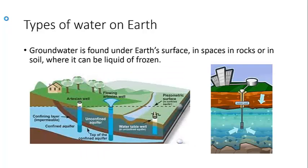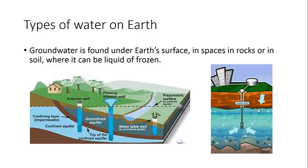The other type of water is groundwater. Groundwater, just like it says, is found underneath Earth's surface. It's found in the spaces in rocks or in soil and can be in liquid form or frozen. As you can see here in this picture, there's a house with trees, and underneath the soil there's actually lots of water. In fact, most of the water that you use for drinking or for taking a shower comes from underneath the Earth through a pipe underground. Depending on the temperature and the location, this can be frozen or in liquid form. So those are our two types of water: surface water and groundwater.